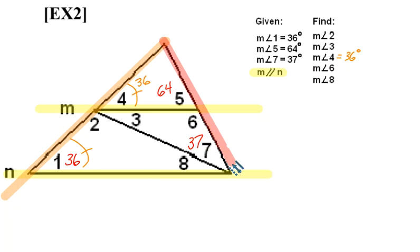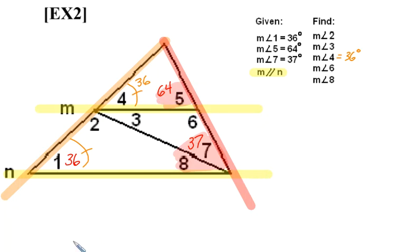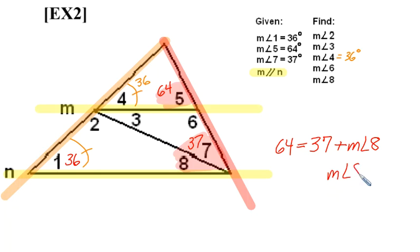Next, we could use the right-hand side of the triangle as a transversal, colored in red. Using that right-hand side as a transversal, angles 7 and 8 merged together correspond with angle 5. Since those angles are formed by parallel lines, the measure of angle 5 has to equal the measures of angles 7 and 8 combined. In other words, 64 degrees equals 37 degrees plus the measure of angle 8. So 64 minus 37 gives us angle 8 equal to 27 degrees.